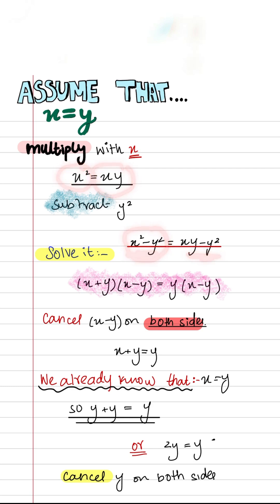Now we are taking y common, it becomes y into (x-y). Now we cancel (x-y) on both sides of the equation.